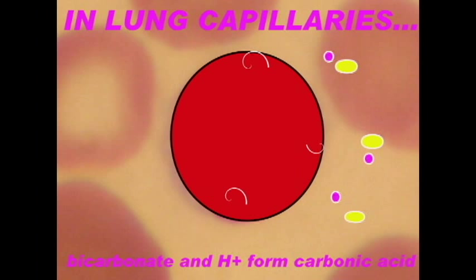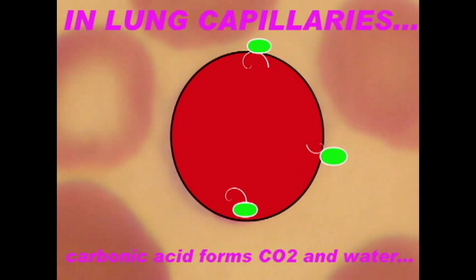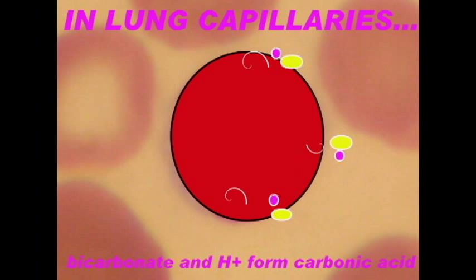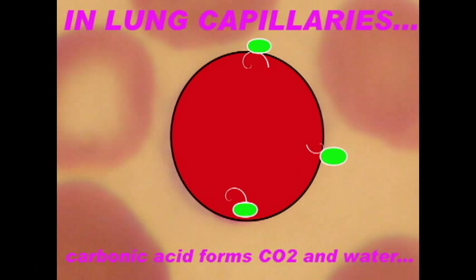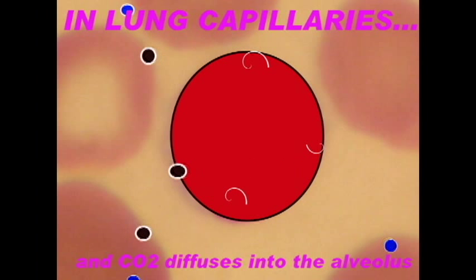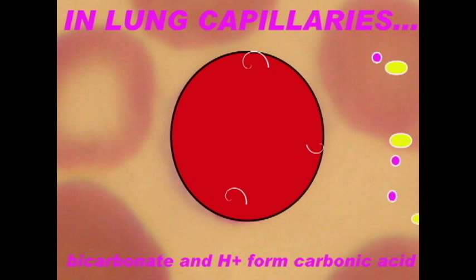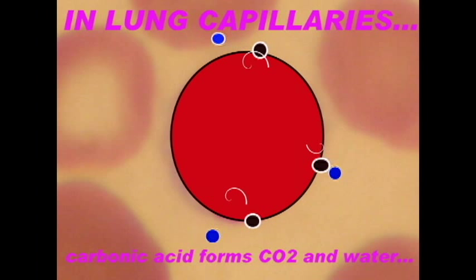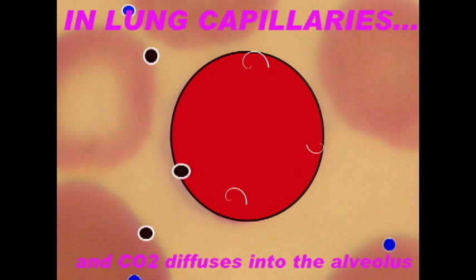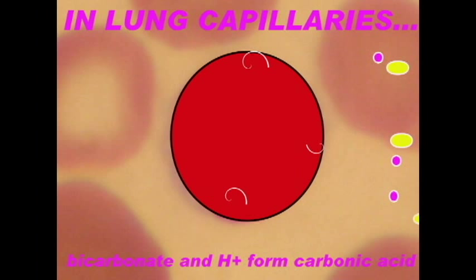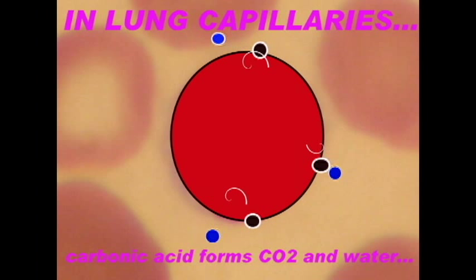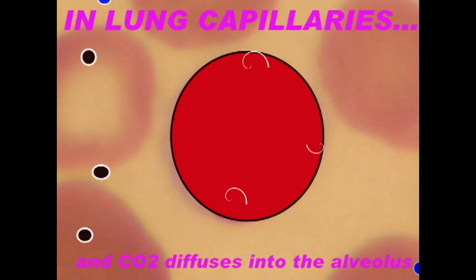In the lungs, bicarbonate will once again reunite with hydrogen ions to form carbonic acid, and once again carbonic anhydrase — the enzyme of red blood cells — will help the process. So bicarbonate and hydrogen ions become carbonic acid. Carbonic acid can then dissociate to become carbon dioxide and water, and this carbon dioxide can then diffuse out of the blood into the air sacs and thus be exhaled. So in the lungs, the reverse process occurs where bicarbonate and hydrogen ions become carbonic acid, which becomes carbon dioxide and water so that the carbon dioxide can be exhaled.